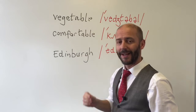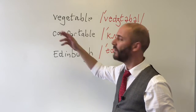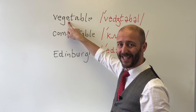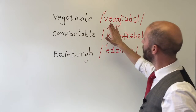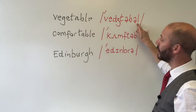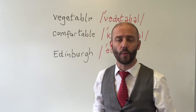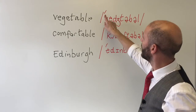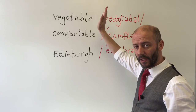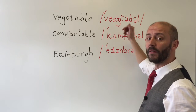'Vegetable' — many students pronounce it 'vegetable' or 'vegetable', but this is wrong because the vowel E is silent. If you look at the phonetics, 'vegetable', it also tells us which syllable is stressed. This is the stress mark — it comes before the stressed syllable. So we know it's 'VEGetable'.